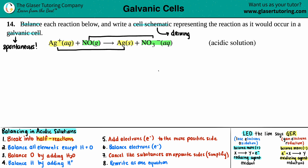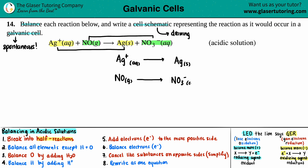Breaking into half reactions: the top half reaction is Ag⁺(aq) → Ag(s), and the bottom half reaction is NO(g) → NO₃⁻(aq). Step one is done — seven more to go.